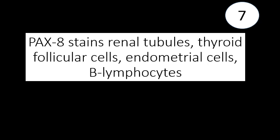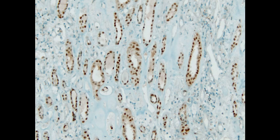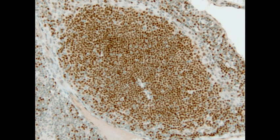Finally, PAX-8 can stain some normal tissues — the same tissues that correspond to the cancers that are PAX-8 positive. PAX-8 stains renal tubules (both proximal and distal), thyroid follicular cells, endometrial cells, and B lymphocytes. The tubular epithelial cells stain but glomeruli do not. PAX-8 is positive in B cells within lymphoid follicles, while T cells do not stain. When there's inflammation, the B cells present provide a nice internal control to confirm that your PAX-8 stain is working. Those are our seven must-know facts for PAX-8.